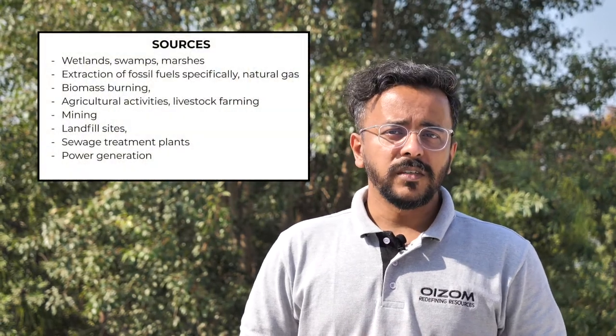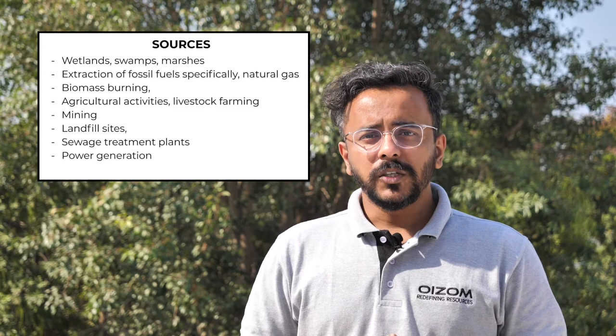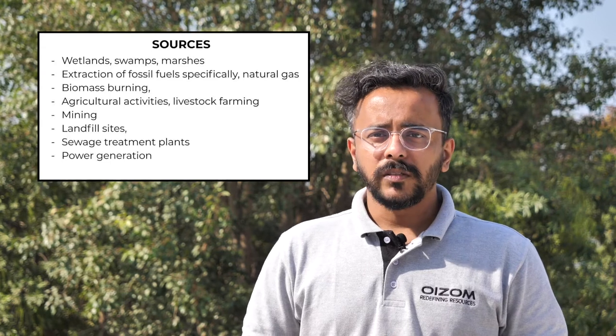It is produced by the decomposition of organic matter in the absence of oxygen by microorganisms called methanogens. It is naturally present under the ground or underwater and is a major component of natural gas. Natural sources of methane emissions are wetlands, swamps, marshes and water bodies.